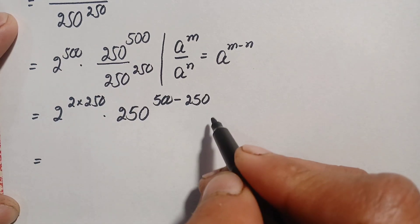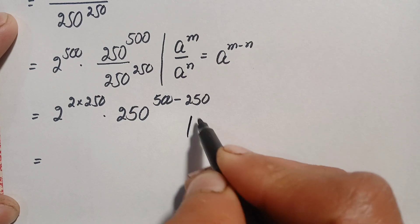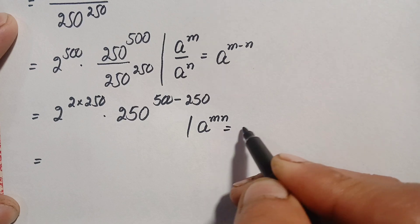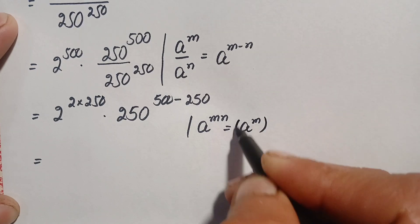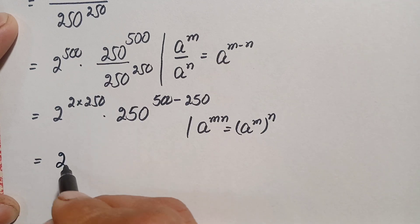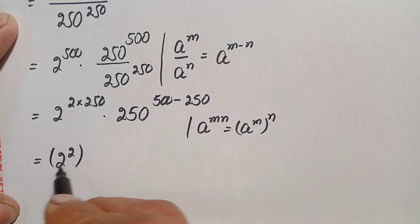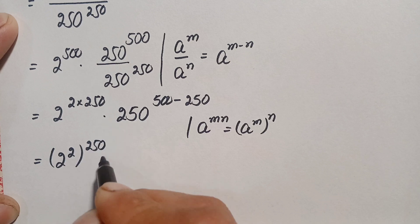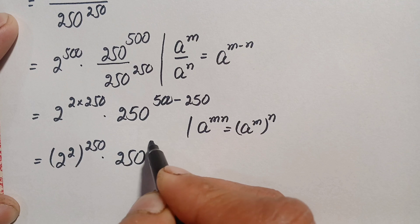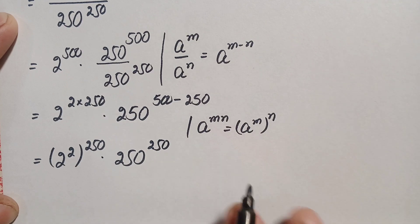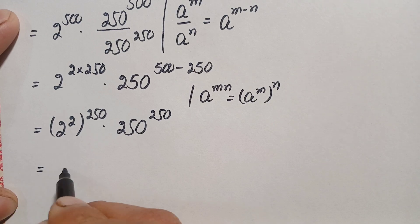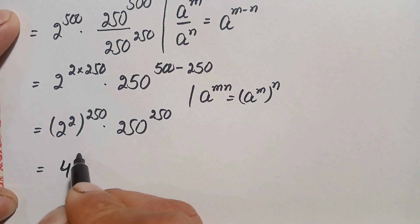Now we use another exponential identity: a raised to power (m times n) equals (a raised to power m) raised to power n. Using this, 2 raised to power 500 can be written as 2 raised to power 2, whole raised to power 250, times 250 raised to power 250.